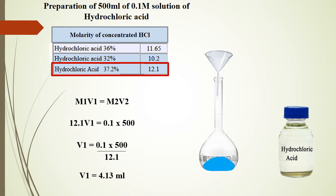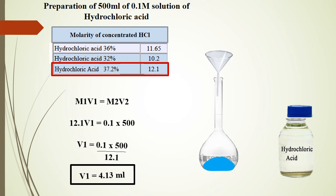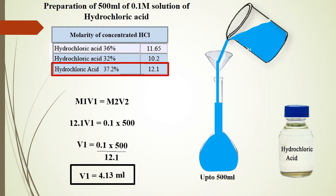To prepare 500 ml of 0.1 molar solution of hydrochloric acid: M1 will be the same as in the previous calculation. V1 is to be found. M2 will be 0.1, as we want to prepare a 0.1 molar solution. V2 will be 500, as we want to prepare a total volume of 500 ml. Take 4.13 ml of concentrated hydrochloric acid using a pipette into a 500 ml flask having a little water in it, and dilute the solution up to 500 ml. This will be 500 ml of 0.1 molar solution of hydrochloric acid.